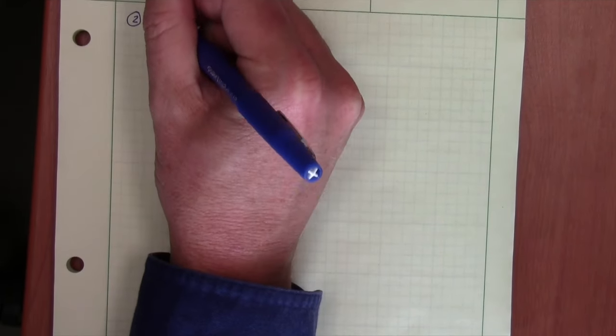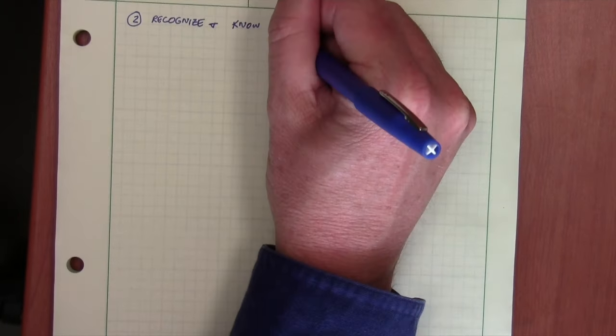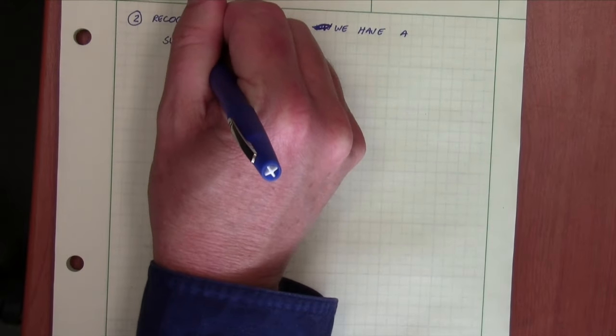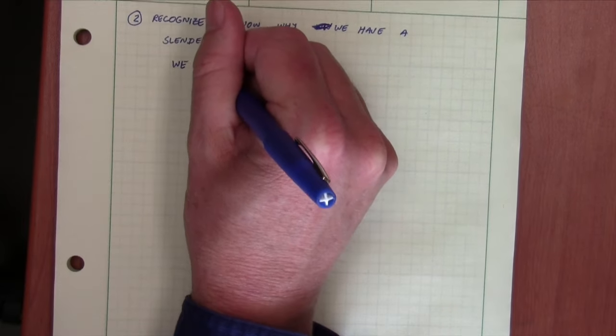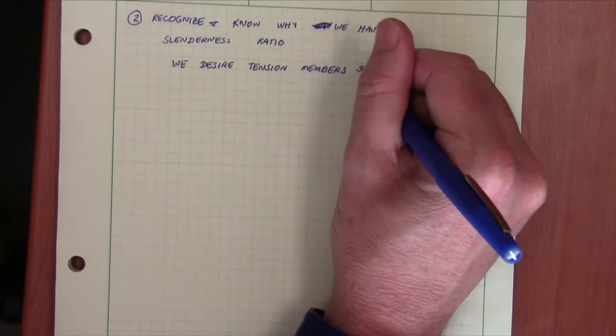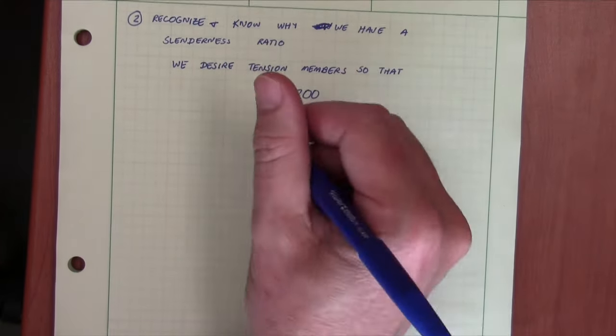The second outcome we'd like to get today is to recognize and know why we have a slenderness ratio. The fundamental approach is that we want to select tension members so that KL over R is less than 200.